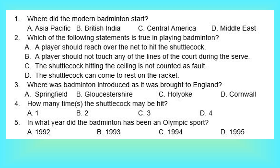3. Where was badminton introduced as it was brought to England? A. Springfield. B. Gloucestershire. C. Holyoke. D. Cornwall. 4. How many times may the shuttlecock be hit? A. 1. B. 2. C. 3. D. 4.